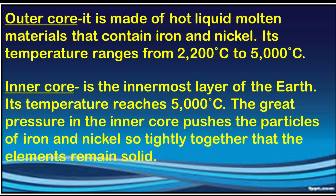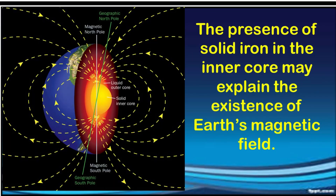The inner core is the innermost layer of the Earth. Its temperature reaches 5,000 degrees Celsius. The great pressure in the inner core pushes the particles of iron and nickel so tightly together that the elements remain solid. The presence of solid iron in the inner core may explain the existence of Earth's magnetic field.